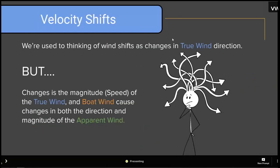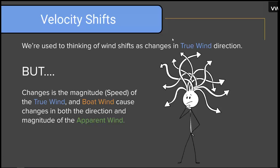Let's talk about velocity shifts. We're used to thinking of wind shifts as changes in the true wind direction — a flag flicking between north and west, or geographic wind bending around a point. But changes in the magnitude or speed of the true wind, and changes in the magnitude or speed of the boat wind, can also cause changes in the direction and magnitude of the apparent wind.